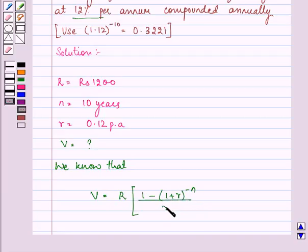What we need to do is substitute the value of R, that is capital R, small r, and n which are given to us from the question into this formula.